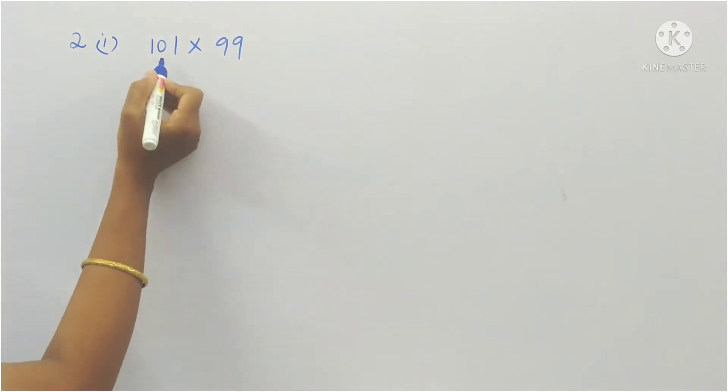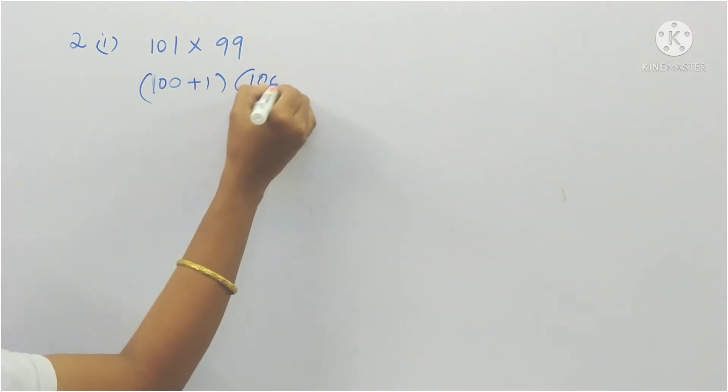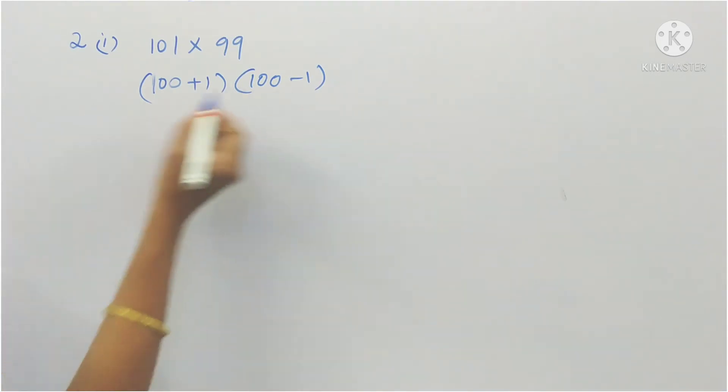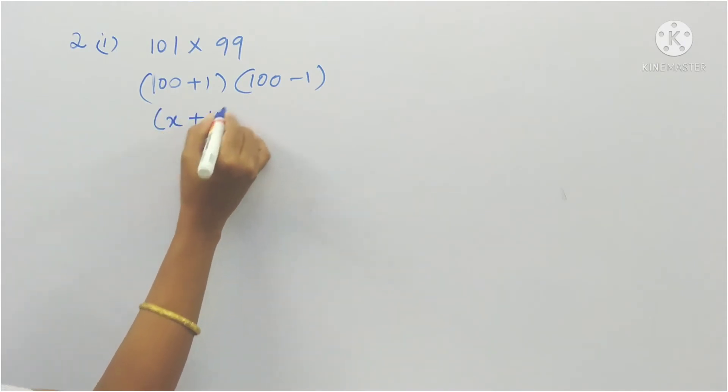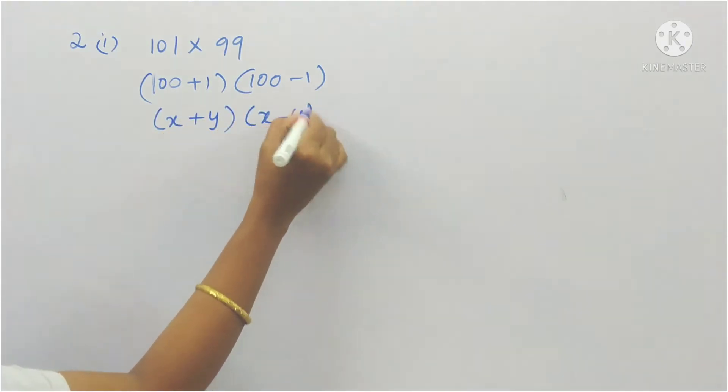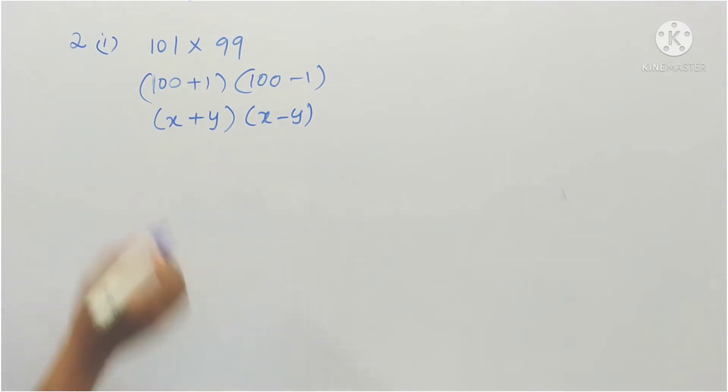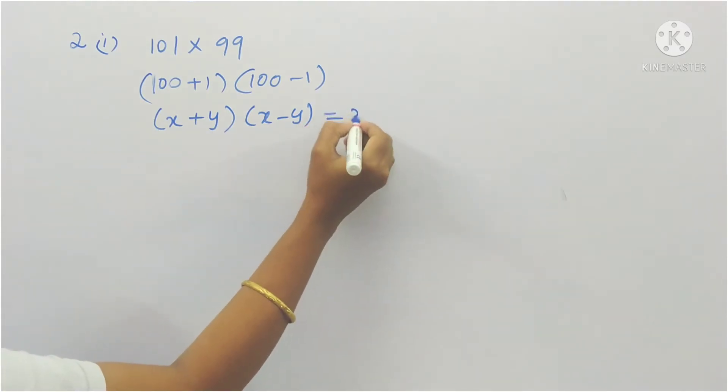See here, 101 into 99. So 101 means what is the immediate round figure? 100, right? So 100 plus 1 and 99, 100 minus 1. So if you observe this, this is in the form of an identity x plus y into x minus y.